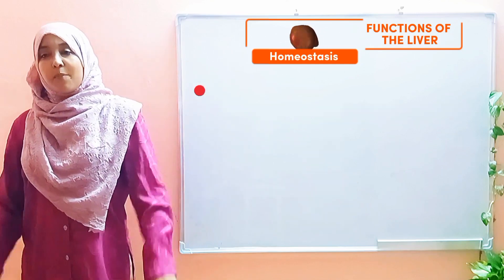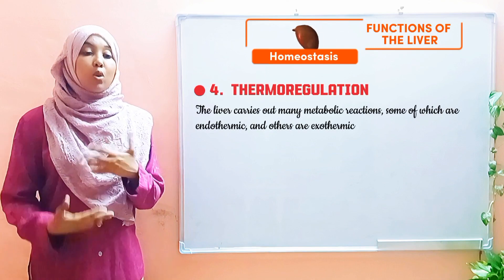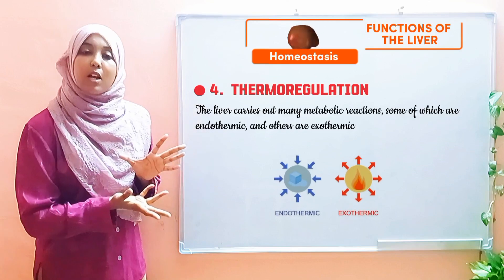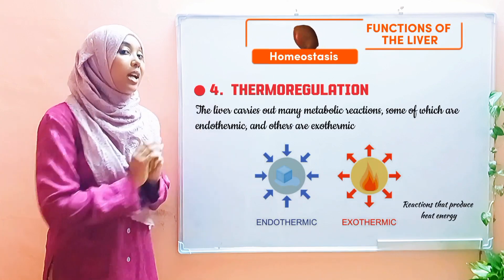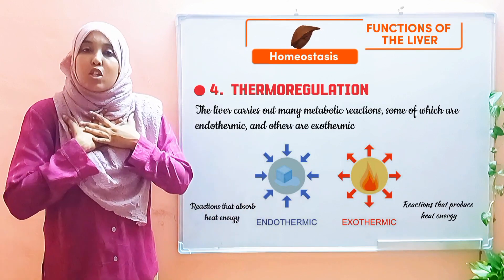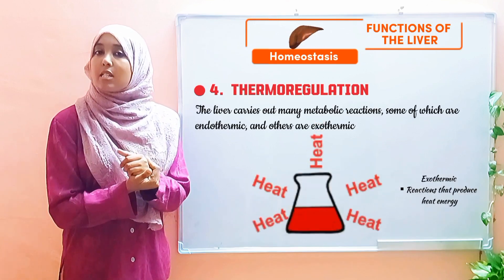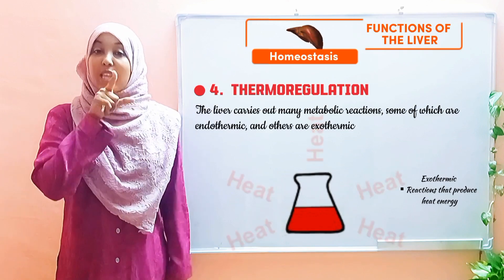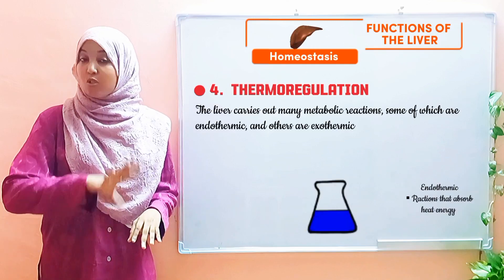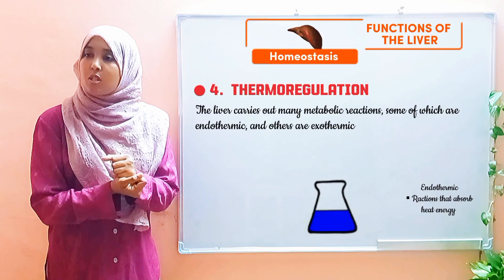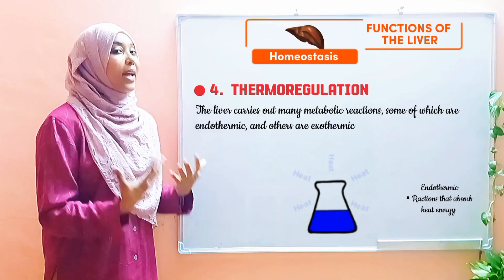Next: thermoregulation. The liver also plays a role in controlling the temperature of our body. It does so through two types of reactions. Exothermic reactions are reactions that lead to the production of heat energy. Endothermic reactions, on the other hand, are reactions that absorb heat energy from the surroundings. For example, if you're in the lab mixing something and you touch the test tube and it's warm, that's an exothermic reaction — it's releasing heat energy. If you touch the test tube and it feels cold, that's an endothermic reaction — it has absorbed heat energy from the surroundings.